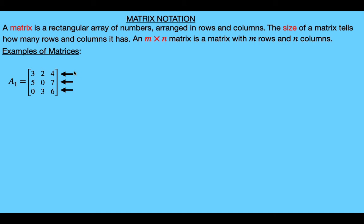So we can see that matrix A1 contains three rows. The columns can be read vertically. The first column contains the elements 3, 5, and 0. The second column is 2, 0, 3. And the third column is 4, 7, and 6. So this matrix also has three columns, making it a 3 by 3 matrix — three rows and three columns.